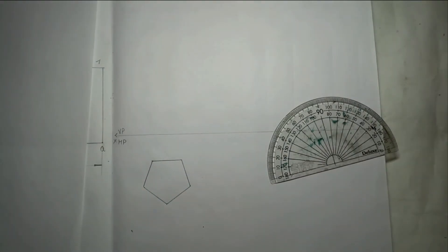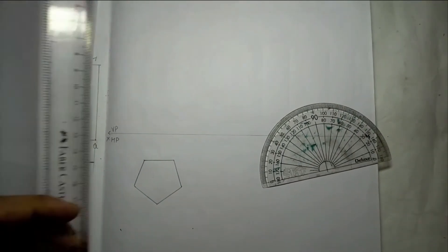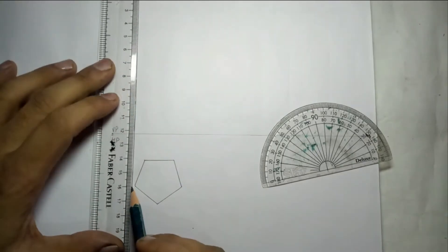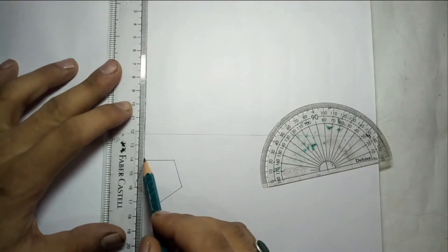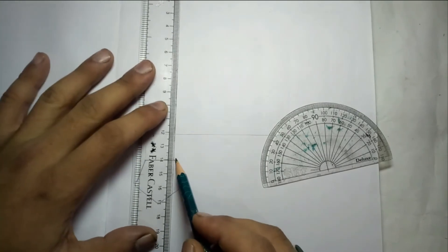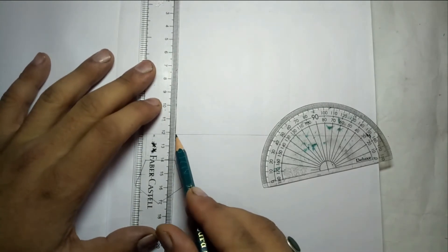Then we will join the closing side. So this is the top view of the pentagonal prism. Now we will make the front view. How we make the front view? Directly take the projection lines on XY, and then we will see how many faces will be visible.